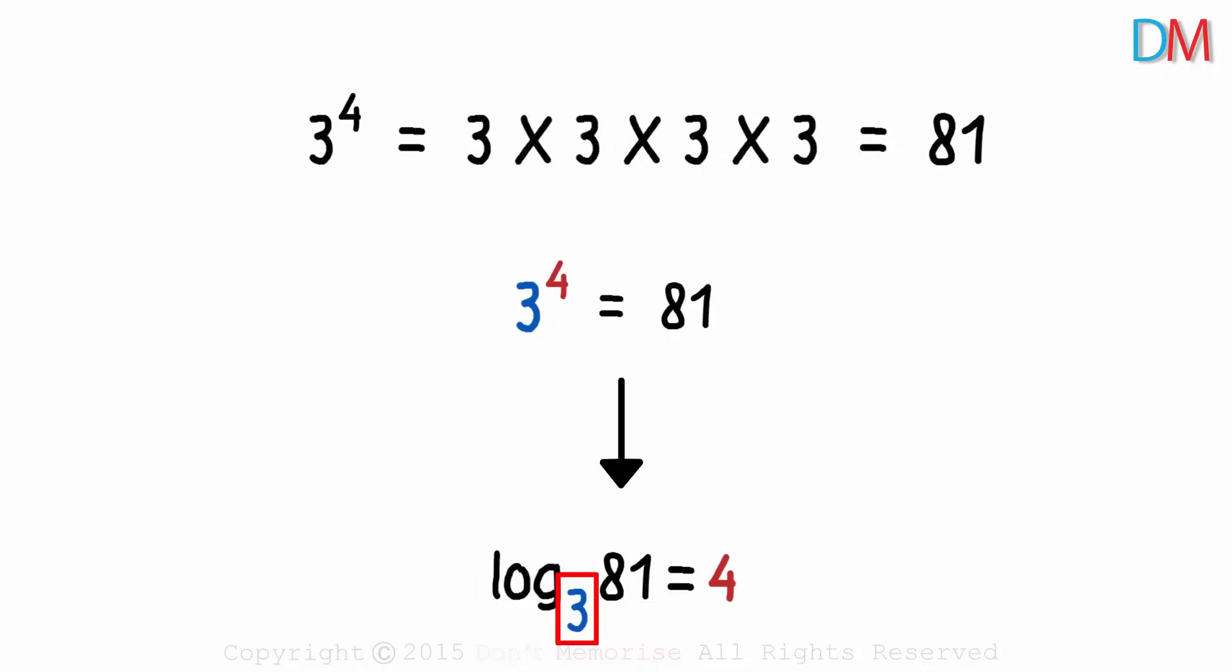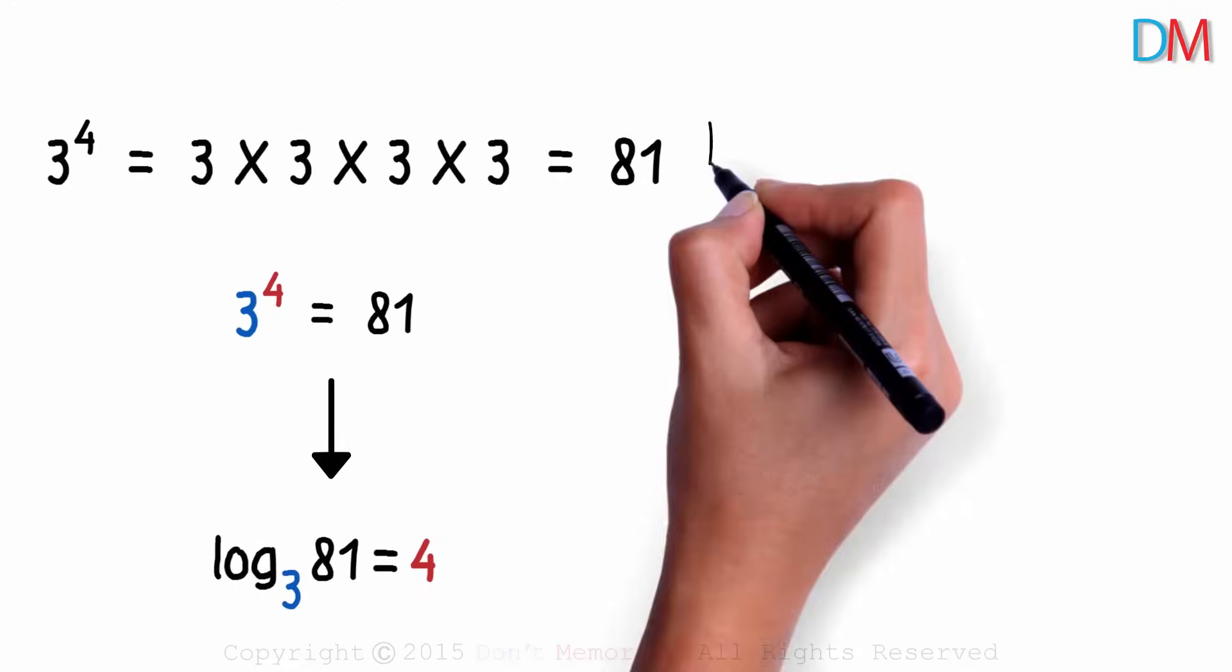The power to which the base of the log needs to be raised to, to get the argument, will be the answer. The power to which 3 needs to be raised to, to get 81, will be the answer. It's 4. Wasn't that simple? Let's look at an interesting problem.